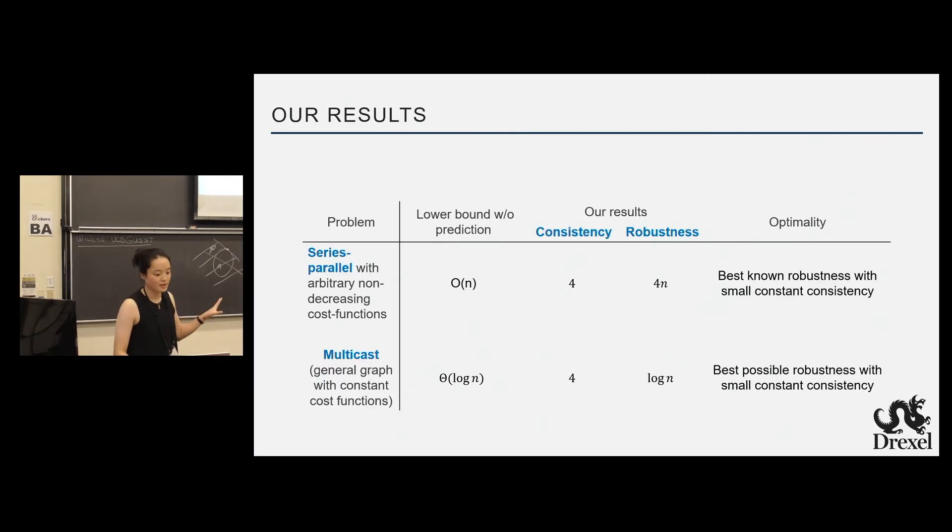So just to showcase our results first. We focus on two particular subclasses of the game. Where we first consider the series parallel graph, which you can think of as an extension of the parallel graph with arbitrary non-decreasing cost functions, where the best known robustness, the best known one can hope for resource-aware is big O of n. And our result is that we achieve 4n robustness and 4 consistency. So to explain this further, we asymptotically achieve the best known robustness. And providing with a correct prediction, we get a small constant consistency.